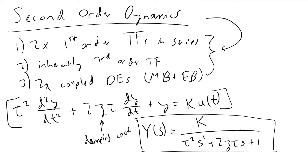The thing to note with these types of second-order dynamics is that we now have two poles, two roots of our denominator that we need to take into account.